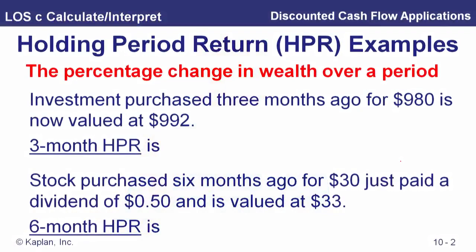Our next concept is the holding period return. The holding period return is simply a percentage change in wealth over a period — it could be two days, two years, or nine months. In the first example, an investment purchased three months ago for $9.80 is now valued at $9.92. Taking $9.92 divided by $9.80 minus one gives a percentage increase of 1.22%, which is our three-month holding period return.